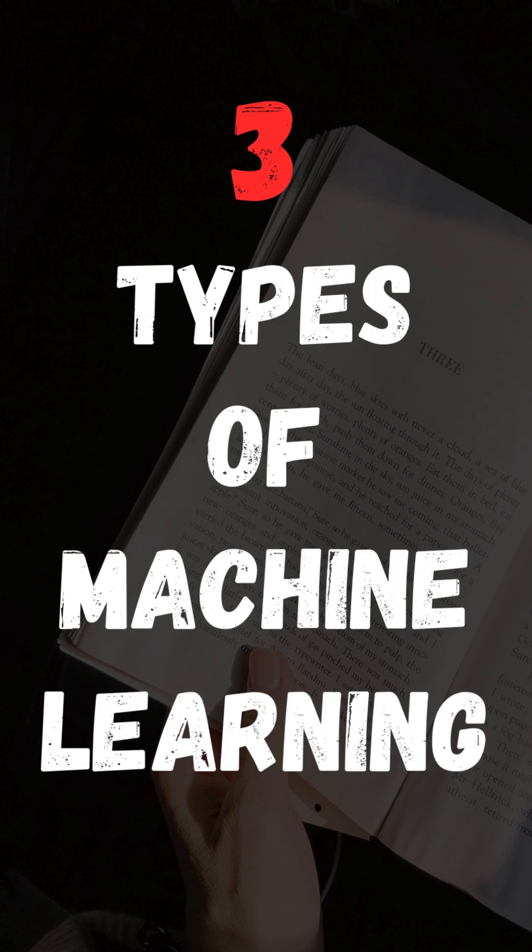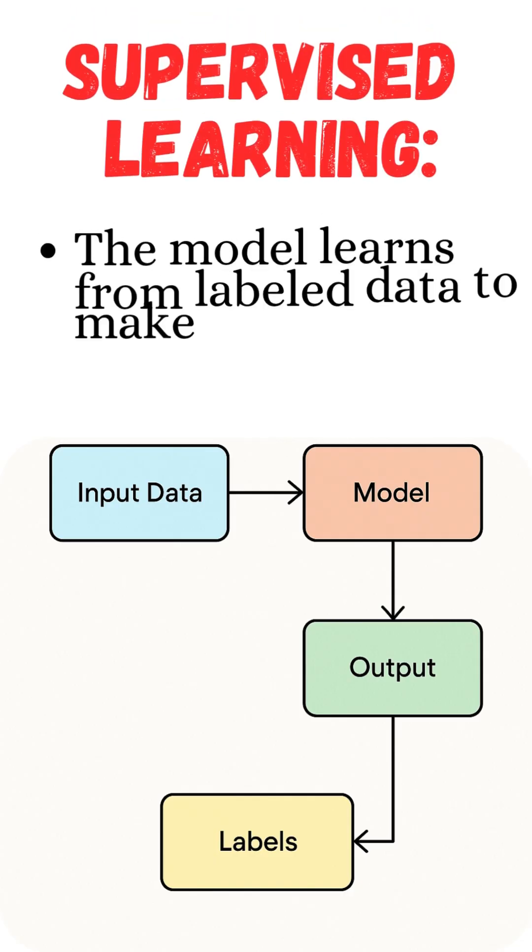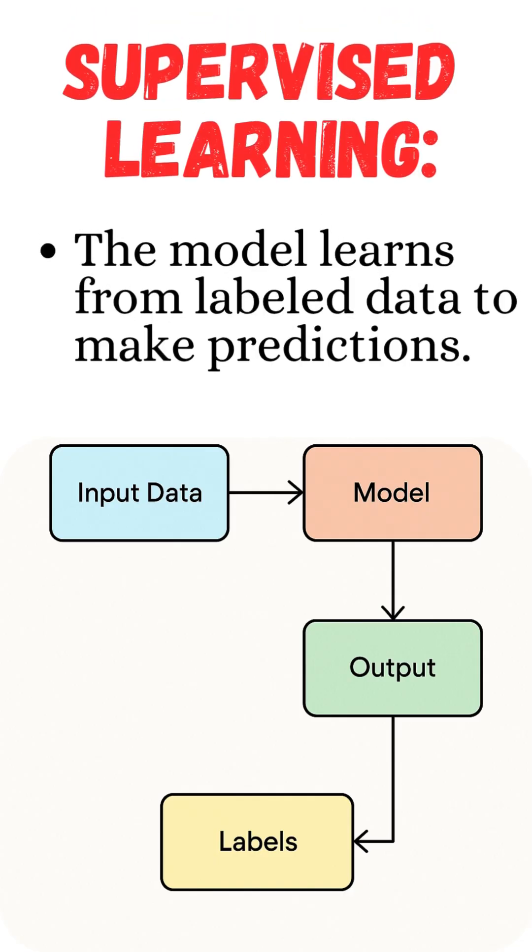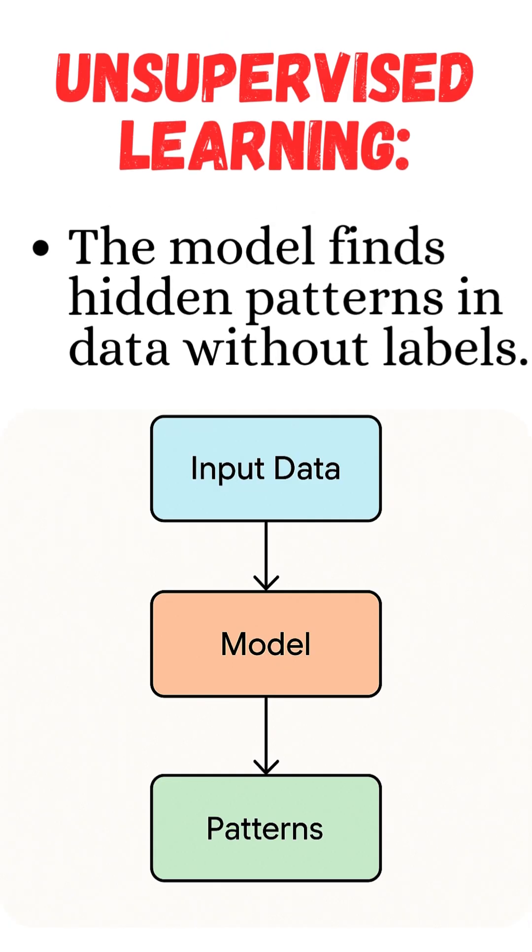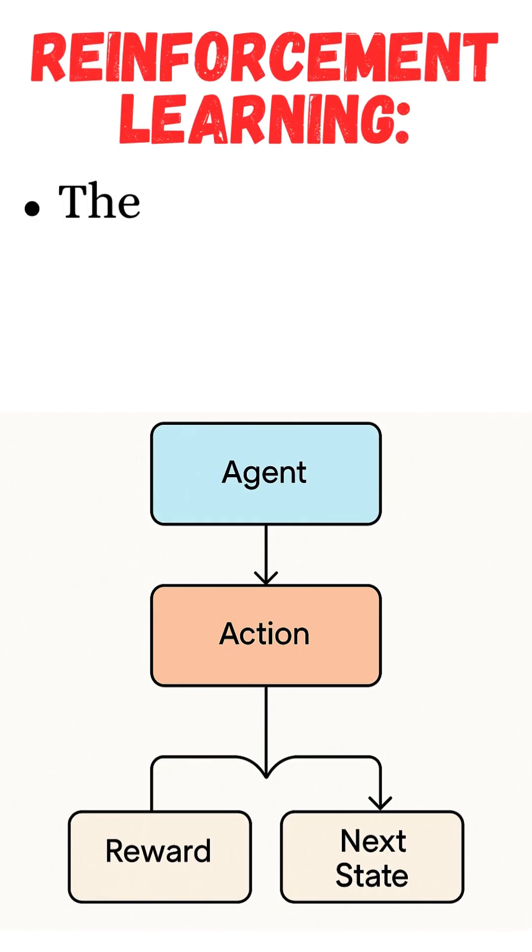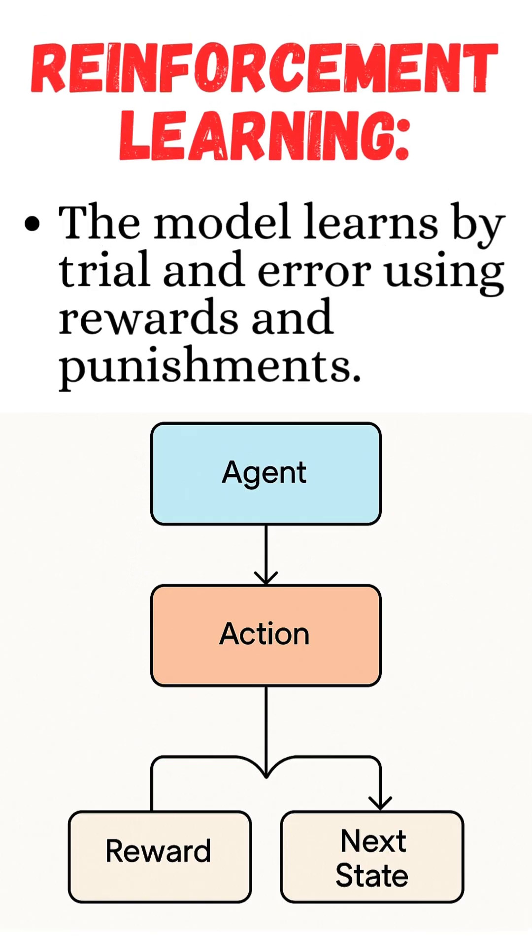There are three main types of machine learning. Supervised learning, like a student learning with an answer key. Unsupervised learning, finding hidden patterns without labels. Reinforcement learning, learning by trial and error, like playing a video game.